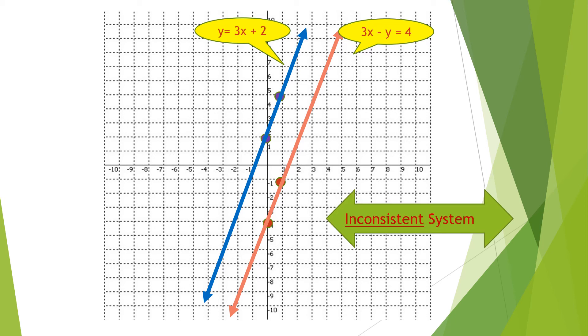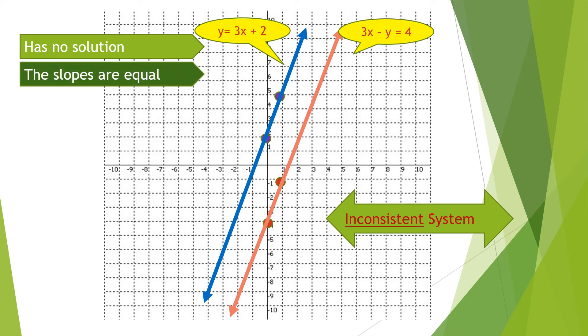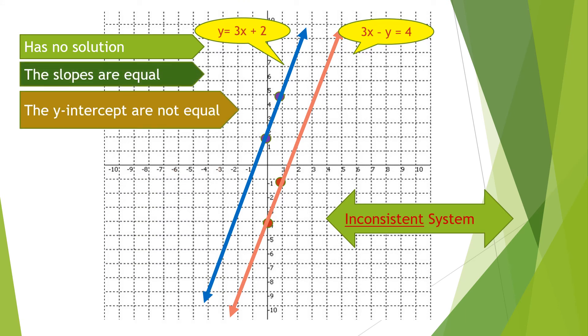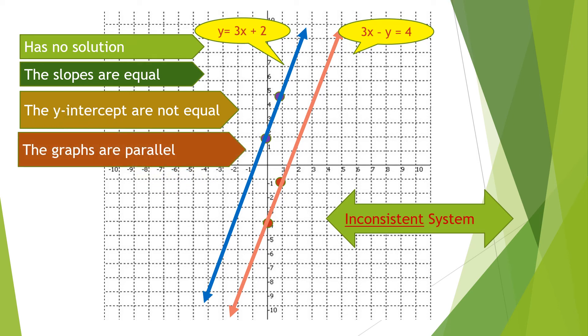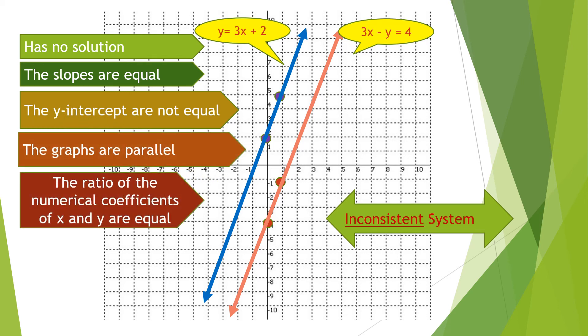The ratio of the numerical coefficients of x is 3 over 2, which is not equal to the ratio of the coefficients of y, which is 1 over negative 1, which is not equal to the ratio of the constants 5 over 9. The second type is parallel lines, called the inconsistent system, which has no solution. The slopes are equal, the y-intercepts are not equal, the graphs are parallel, and the ratio of the numerical coefficients of x and y are equal — in our example, 1 over 1 equals 1 over 1, regardless of the ratio of the constants.